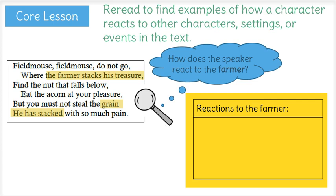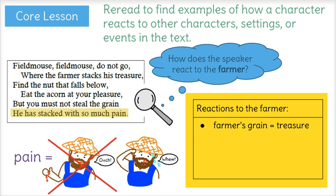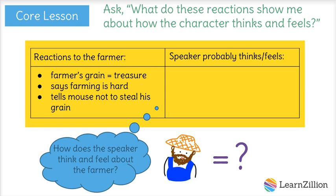The speaker also notes that the farmer stacked his grain with a lot of pain. Here the author is using a meaning of the word 'pain' you might not be familiar with — he doesn't mean it hurt the farmer. Instead, the word pain shows that he went to a lot of hard work to bring in his harvest. So this tells us the speaker thinks the farmer works really hard. The other clue is that the speaker actually talks to the mouse on behalf of the farmer, telling the mouse not to steal the farmer's grain. The speaker compares the farmer's crops to treasure and is sticking up for the farmer — he's really thoughtful and doesn't want the mouse to ruin all the farmer's hard work.